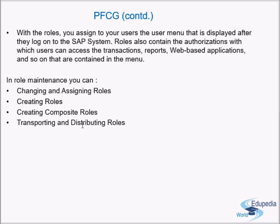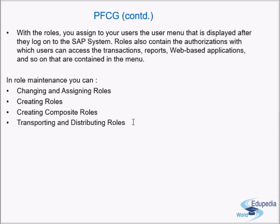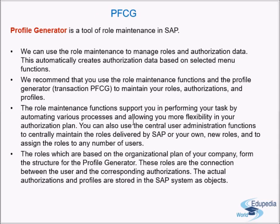In role maintenance you can do the following four major things: change and assign roles, create roles, create composite roles, and transport and distribute roles. In the next series of videos we'll learn about each of these. This video is a small introduction to PFCG — the profile generator tool used in role maintenance in SAP. All these functions work on roles, and profiles are automatically generated.